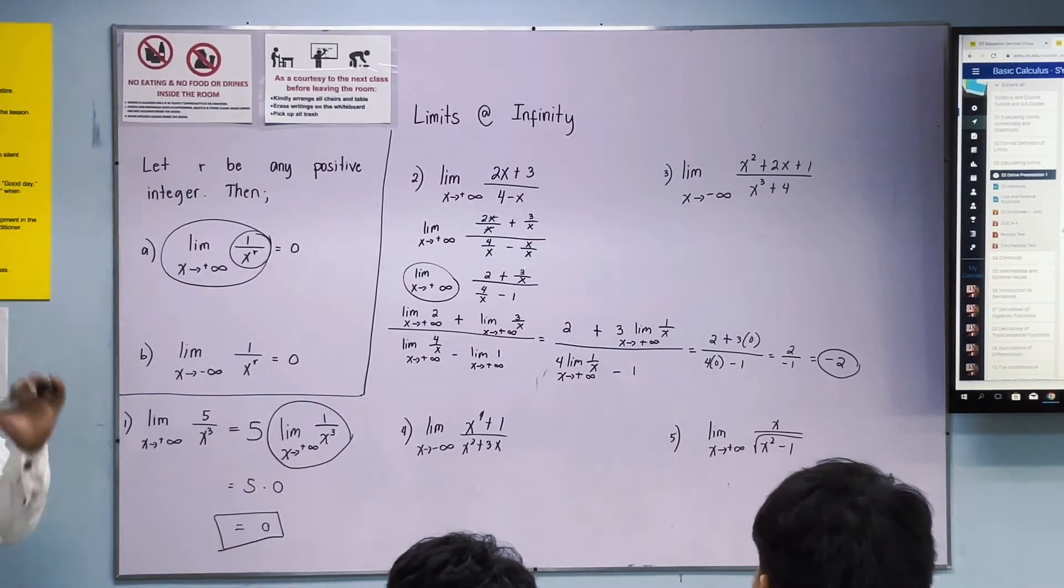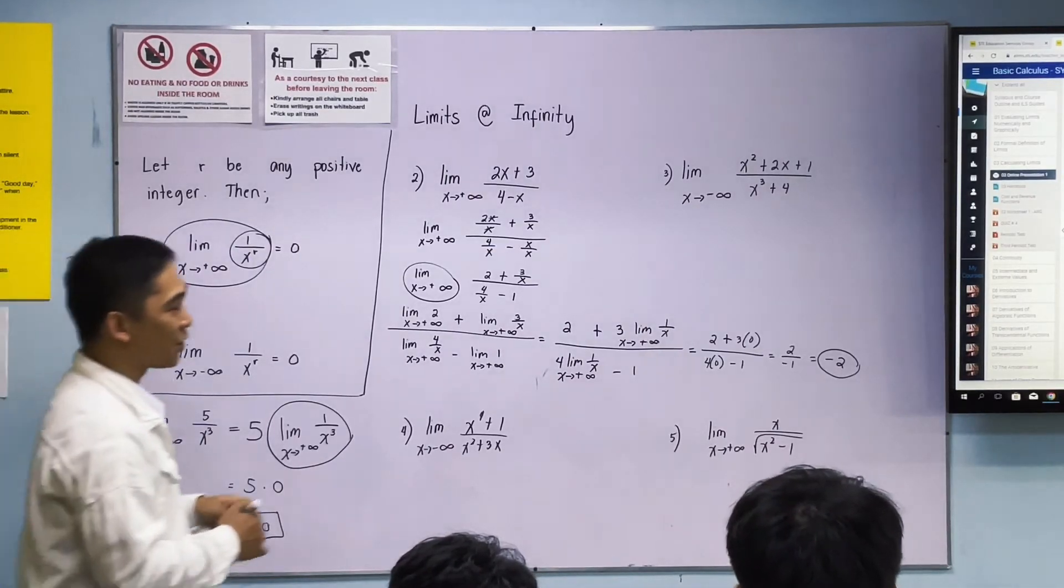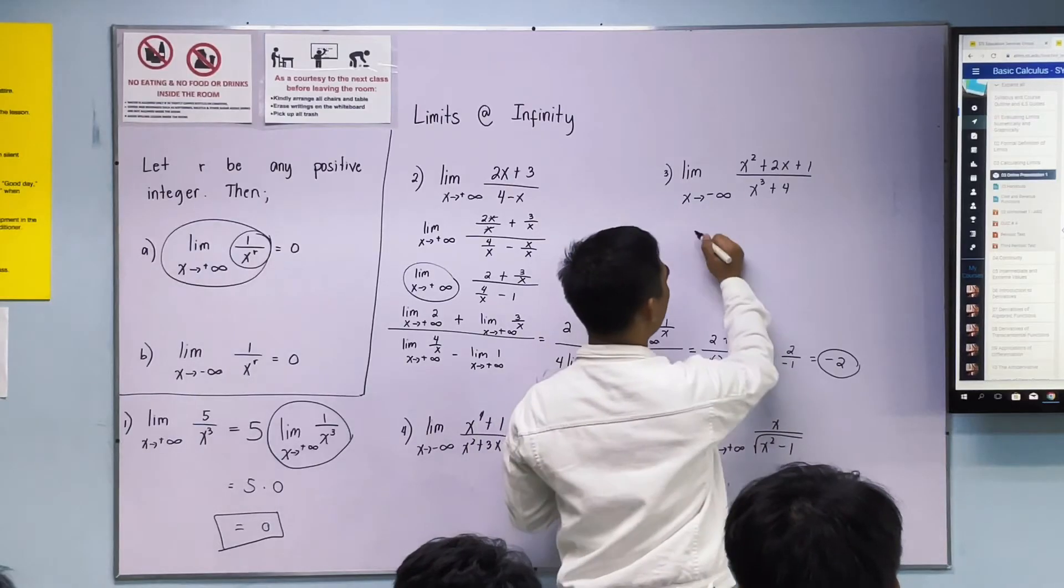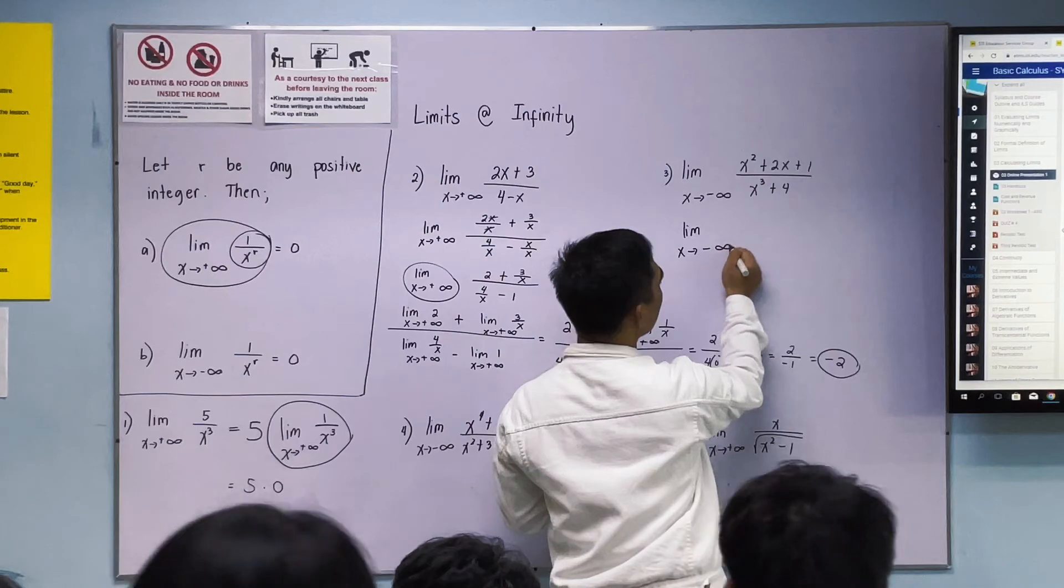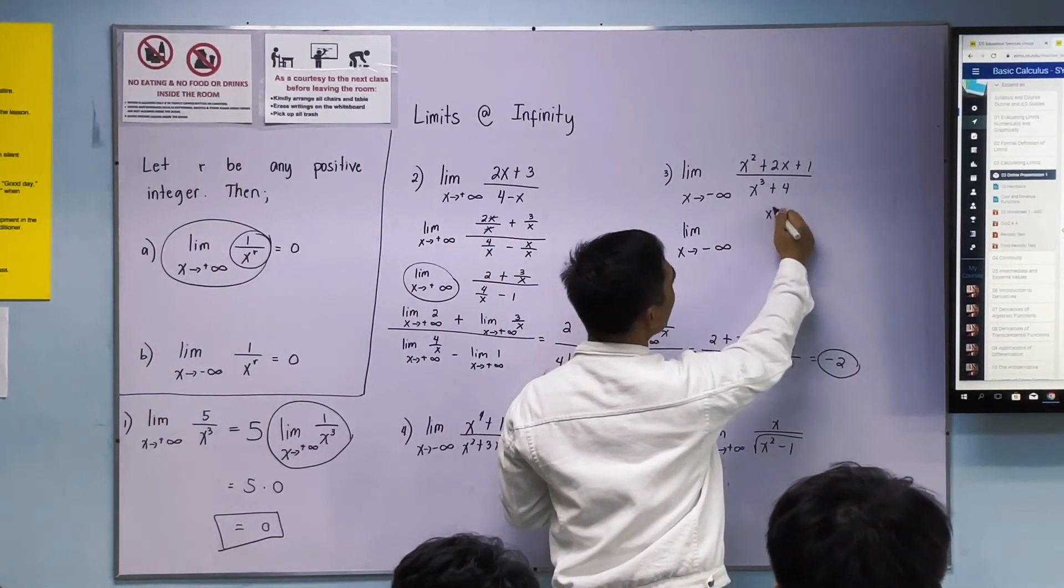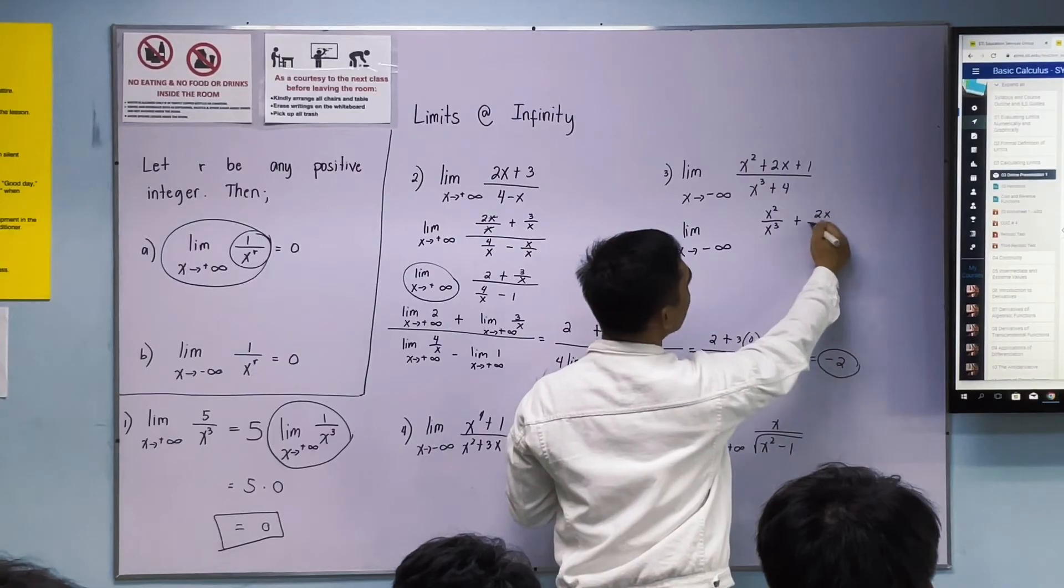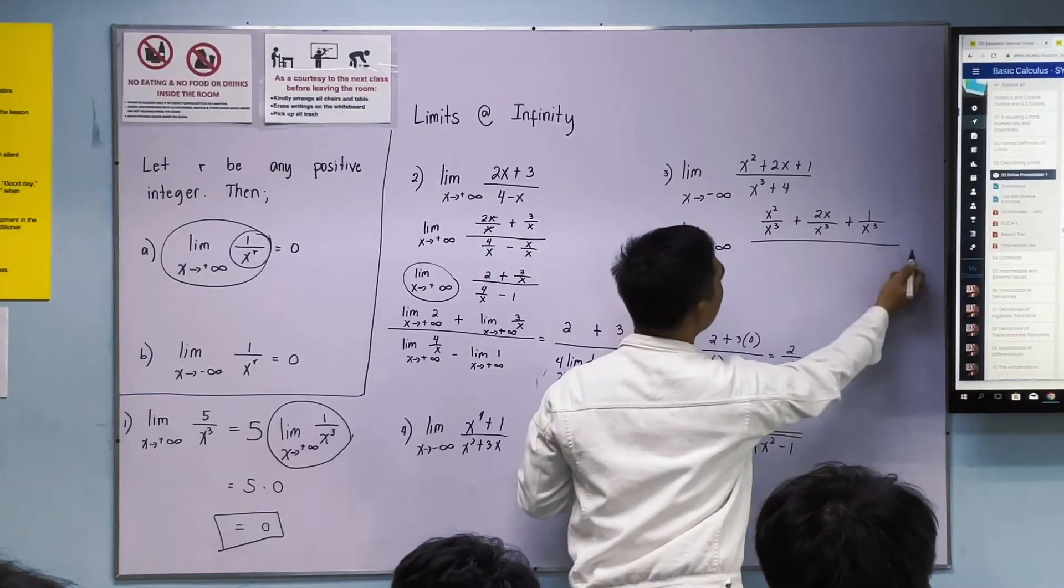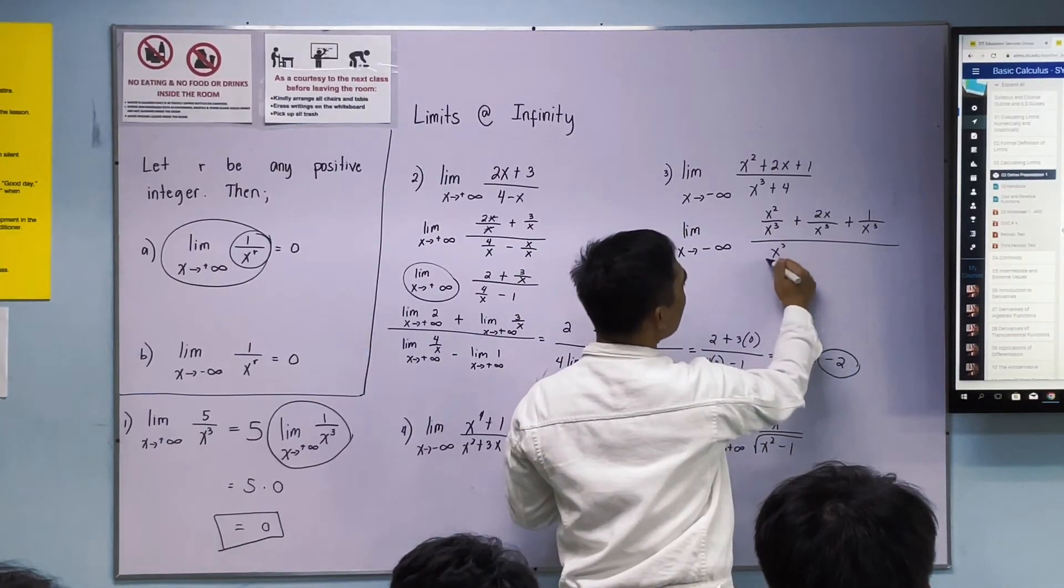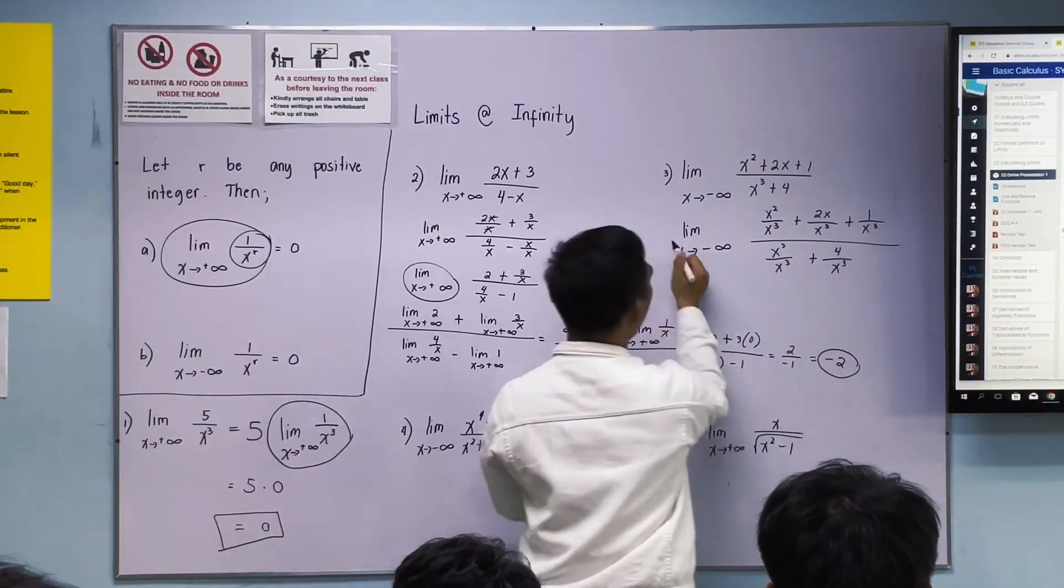What is our variable in number 3? x cubed. So what we'll divide all terms by is x cubed. This will become: x squared over x cubed plus 2x over x cubed plus 1 over x cubed over x cubed over x cubed plus 4 over x cubed.